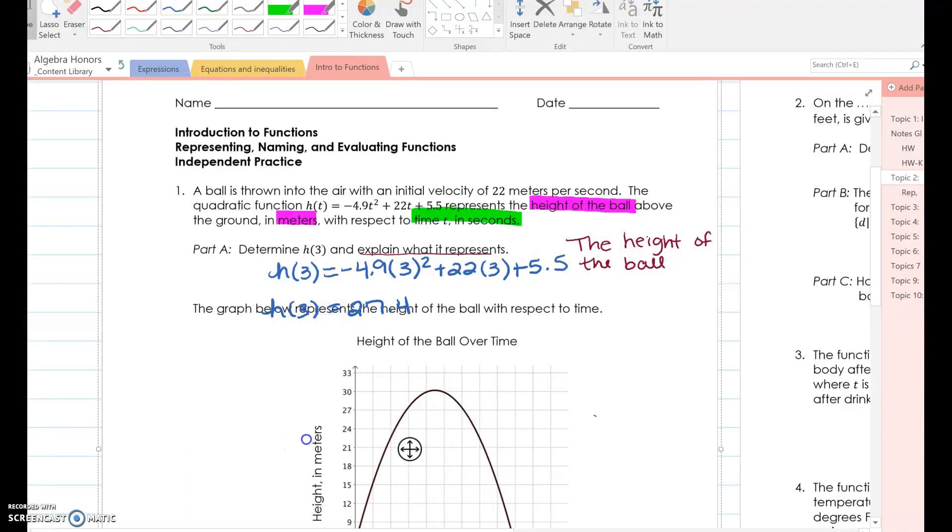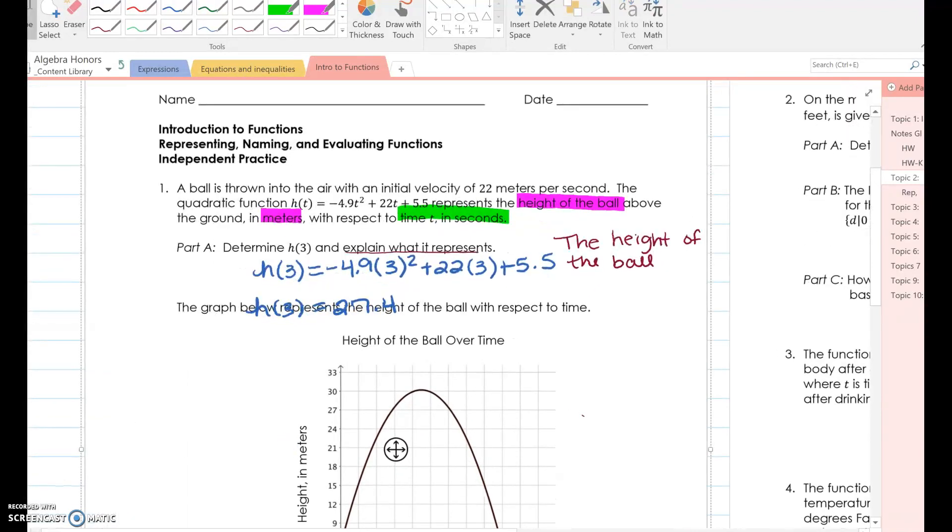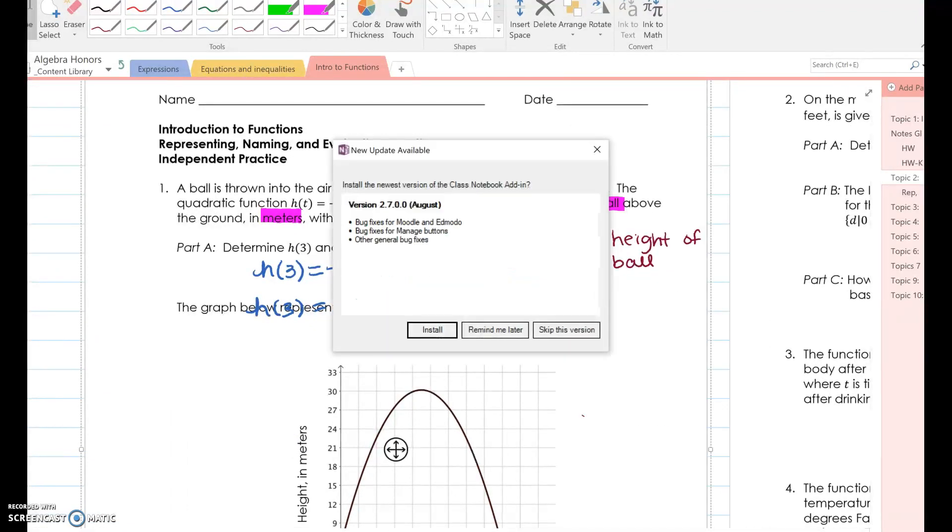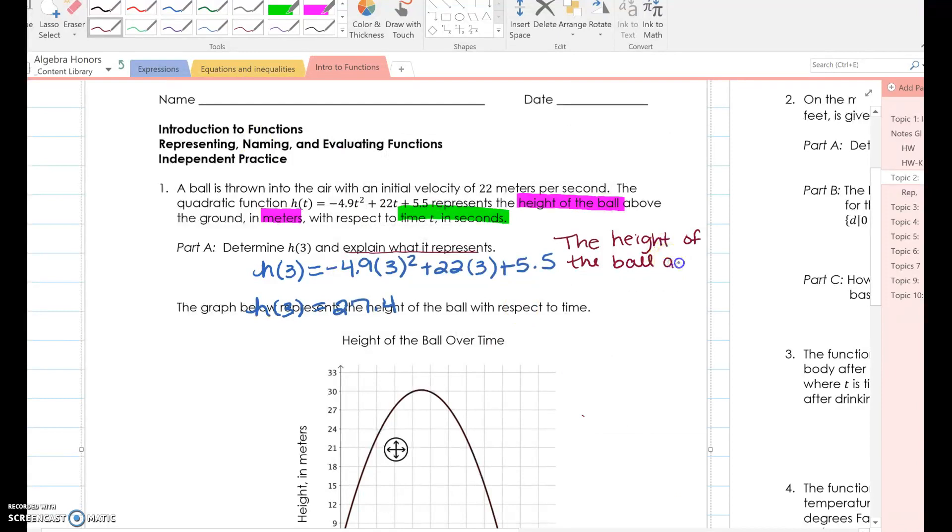The height of the ball after, whoa, why the heck did that move? It's weird. So the height of the ball after how many seconds? Well, h of 3. So the height of the ball after 3 seconds. Seconds, right? Yeah. T in seconds is 27.4. What? Look back in your problem. Height is measured in meters. So 27.4 meters.